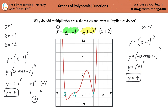Now you might say, you just did a cube — a multiplicity of 3. What happens if it were another odd number like 1? Well, think about it. If this were raised to the first power, a positive number raised to the first is still positive. And a negative value raised to the first power is still negative. So we have the same pattern. This is why odd multiplicities will cross the x-axis — because on one side of your zero, the sign of the y value will be different than on the other side. When you have an even multiplicity, it's going to be the opposite.